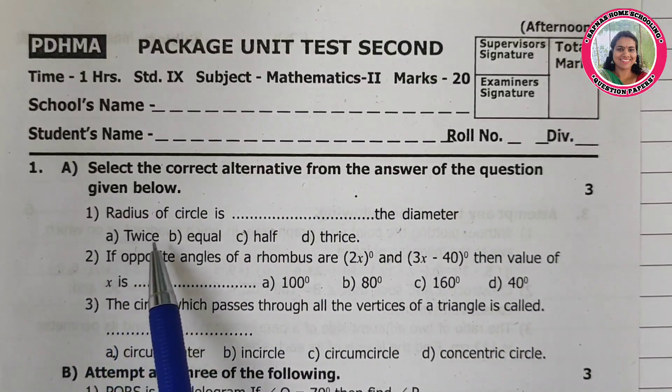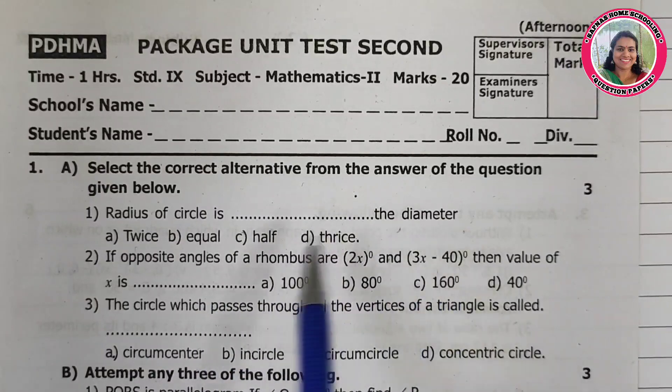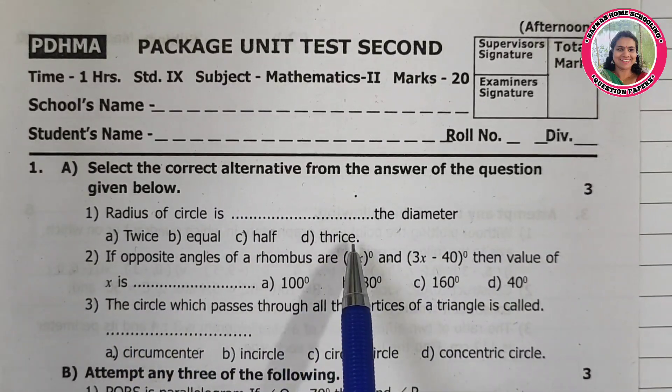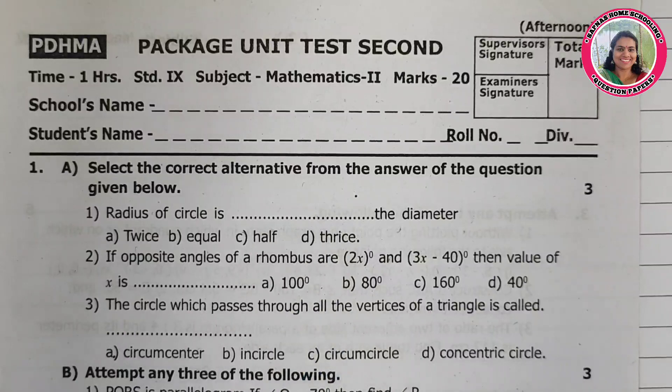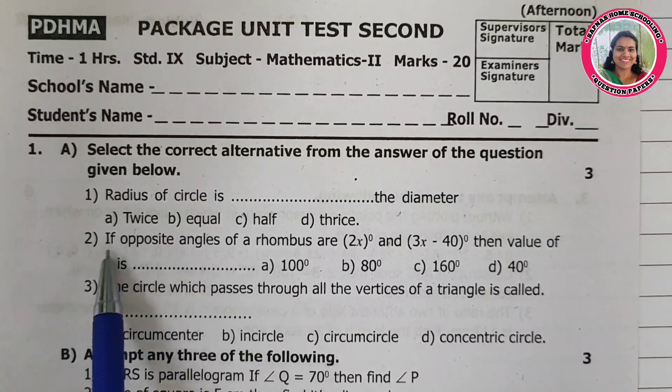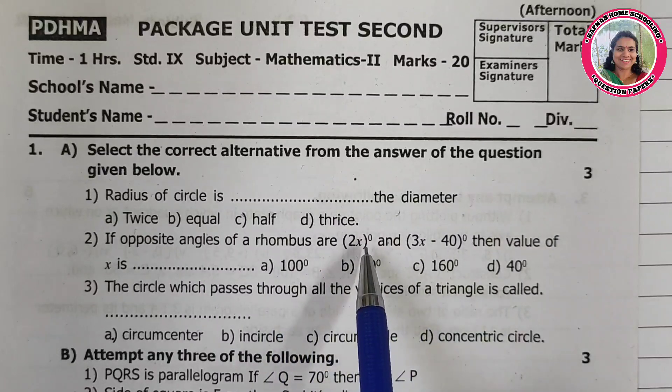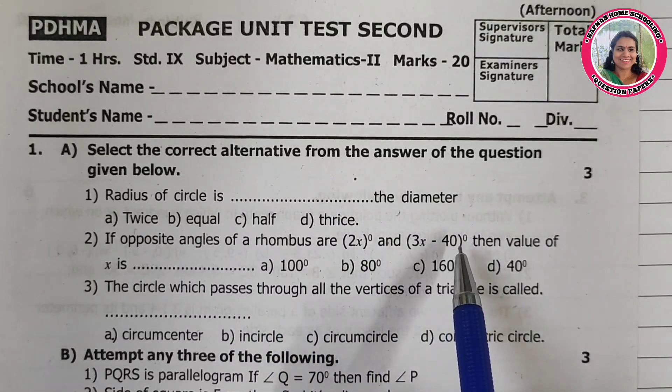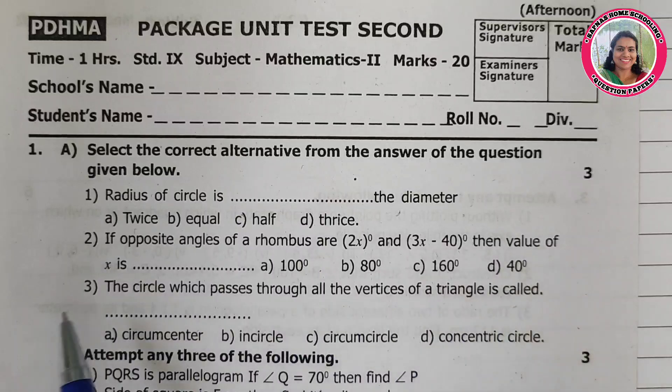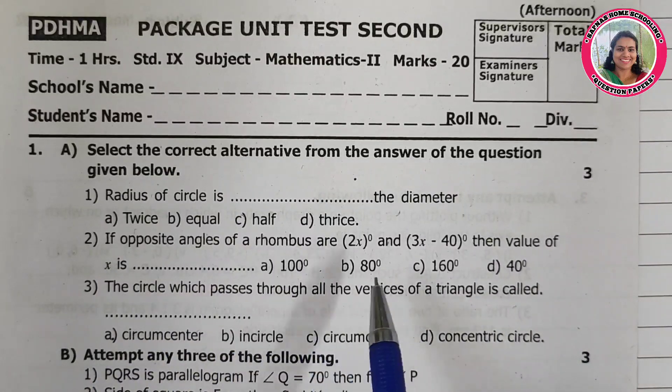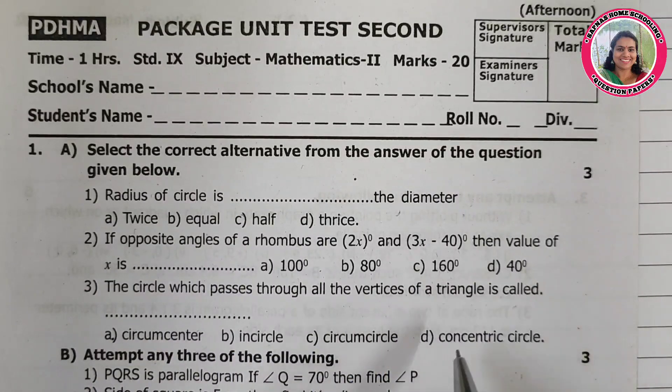First, radius of a circle is the diameter: twice, equal, half, or thrice. You have to choose the correct option. Second, if opposite angles of a rhombus are 2x degrees and 3x minus 40 degrees, then value of x is 100 degrees, 80 degrees, 160 degrees, or 40 degrees.